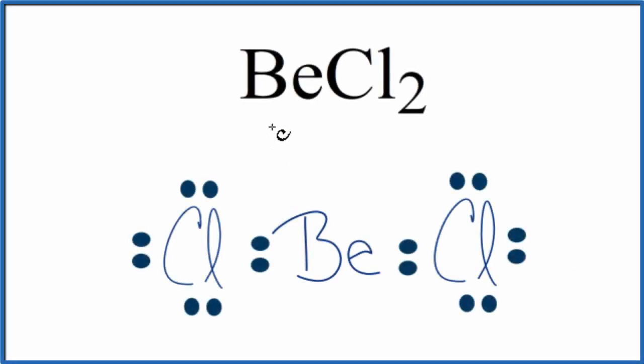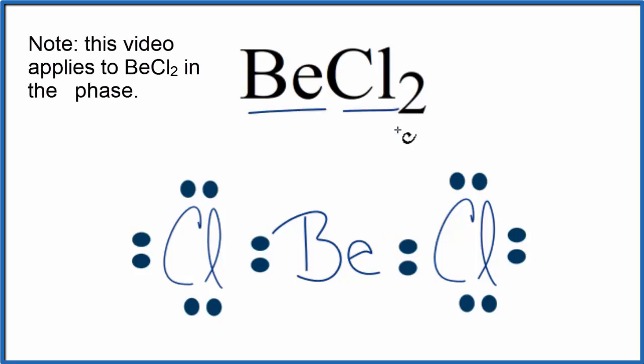In this video, we'll look at the molecular geometry for BeCl2, beryllium chloride. We have a Lewis structure here, and based on the Lewis structure, we can figure out the molecular geometry.